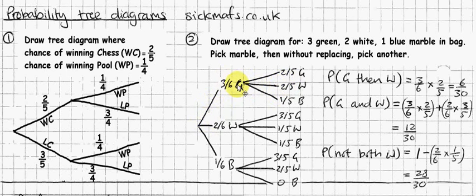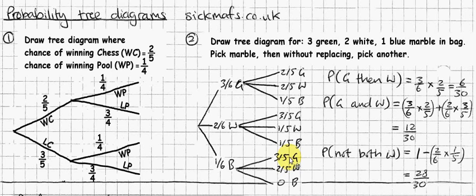So the probability of green then white is 3/6 times 2/5. The probability of green then green is also 3/6 times 2/5 — it happens to be the same number. The probability of green then blue is 3/6 times 1/5. And the probability of blue then green is 1/6 times 3/5. You multiply the fractions as you go along the tree to get the probability of that particular route.